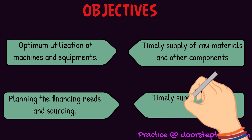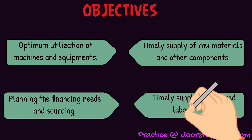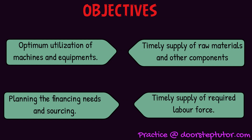Then, timely supply of the required labor force. We all know that for manufacturing a certain thing, we require a certain labor force. Because we have pre-planned everything — how much labor we are going to require and from where we will hire them — it becomes very easy for the organization to acquire the labor force and put them to use accordingly.